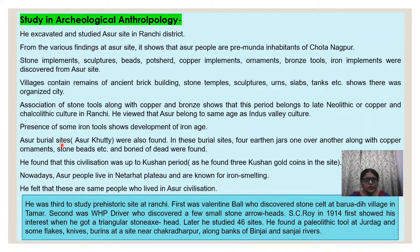Asur burial sites were also found. In these burial sites, four earthen jars one over another, along with copper ornaments, stone beads, and bones of the dead, were found.